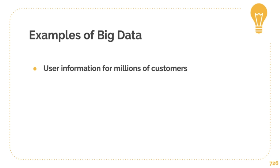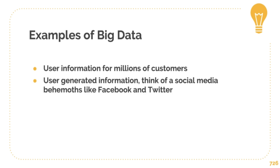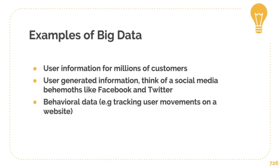So here are some examples of big data. Think about the user information from millions of customers for any multinational or national company — tons of rows with address information, subscription packages, history packages. That data exists all over the place in these organizations. Then think about behemoths like Facebook, Twitter, Google, Amazon — all of these big social media giants have tons of data. Think about WhatsApp — it probably has a million simultaneous conversations going on right now. All of that is considered big data.